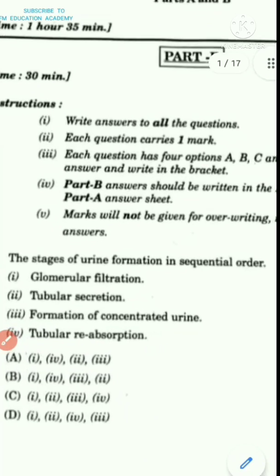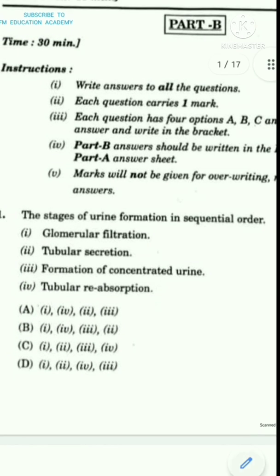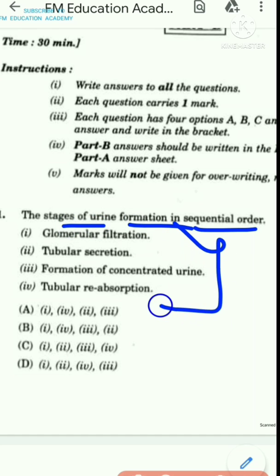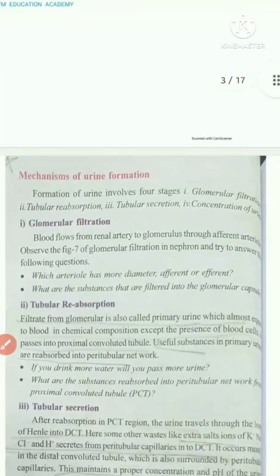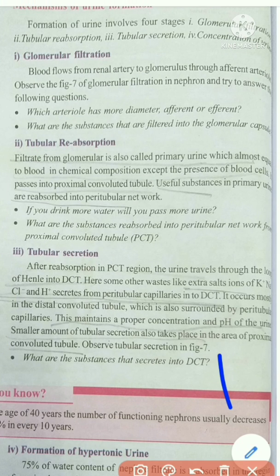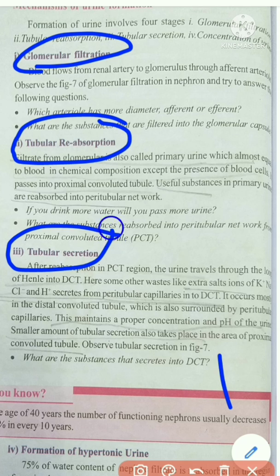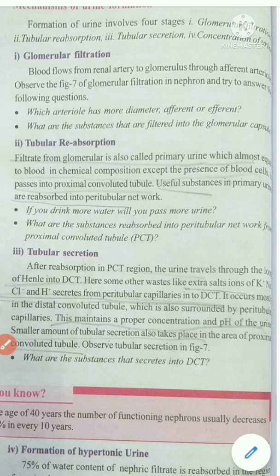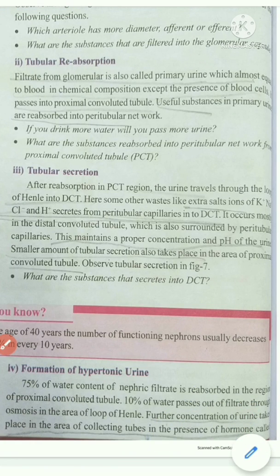The first question is the stages of urine formation in sequential order — that is, how is urine formed? All four stages are mentioned in your textbook. The mechanism of urine formation: first stage is glomerular filtration, second stage tubular reabsorption, third stage tubular secretion, and fourth stage formation of hypertonic urine, which is also called formation of concentrated urine.